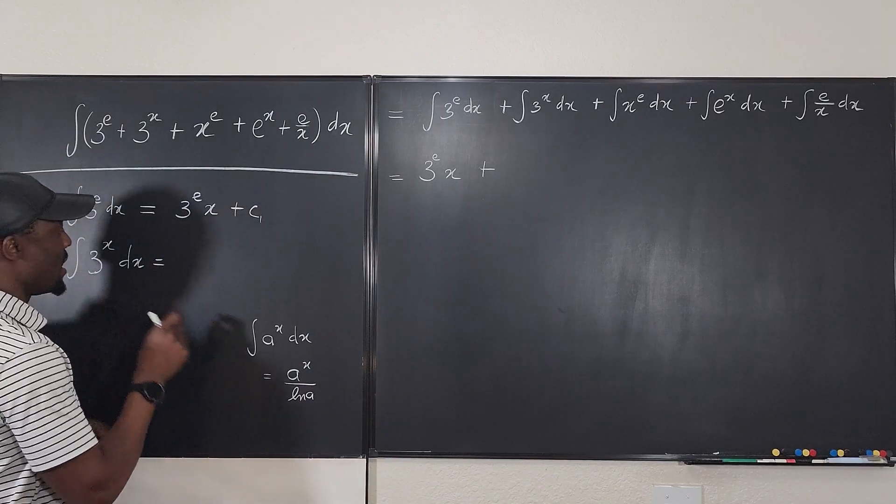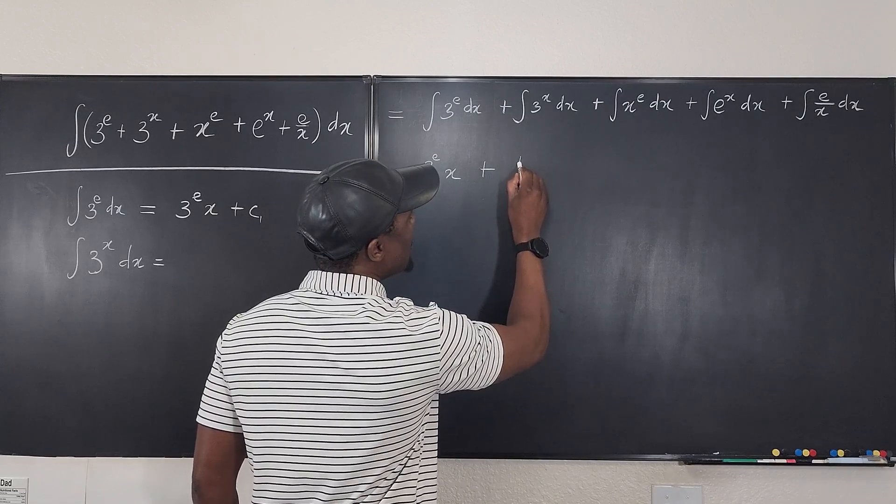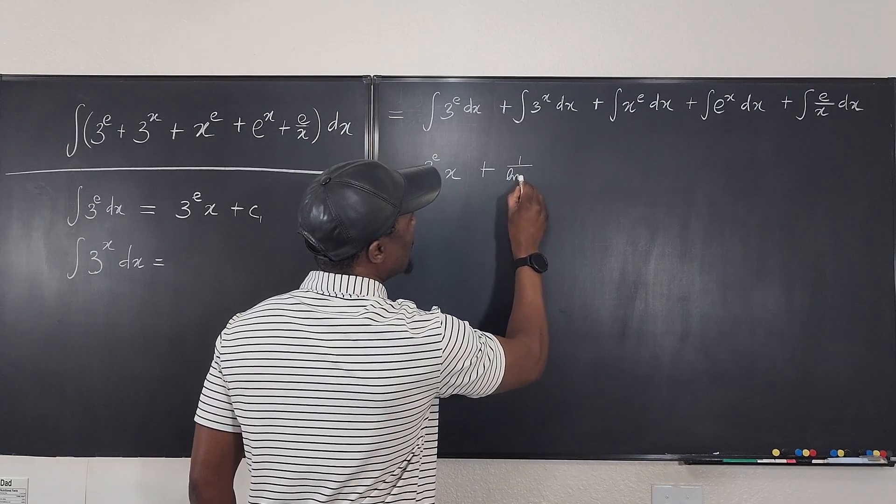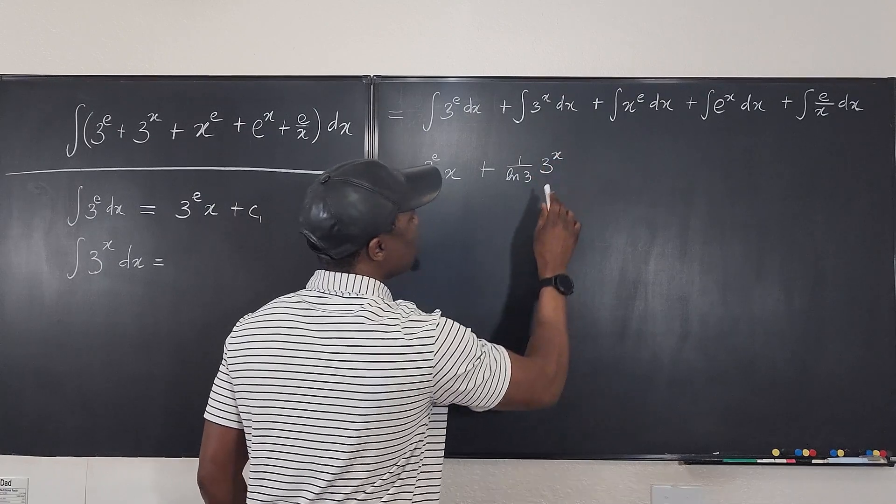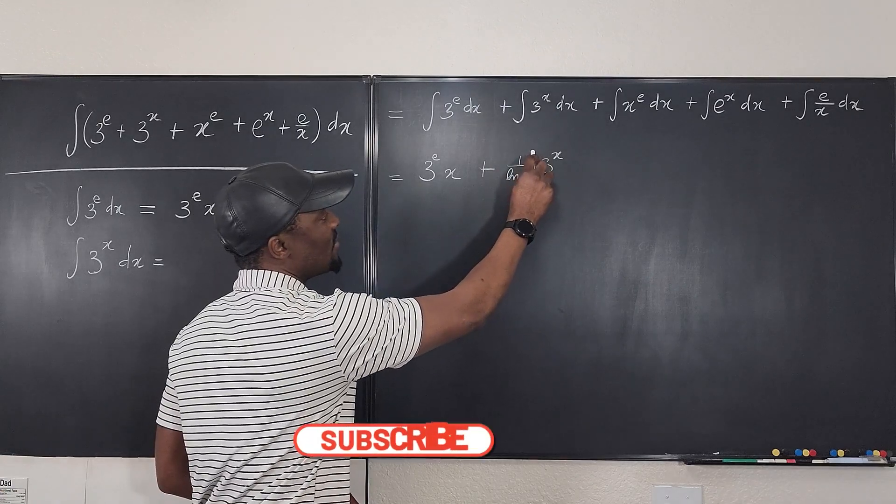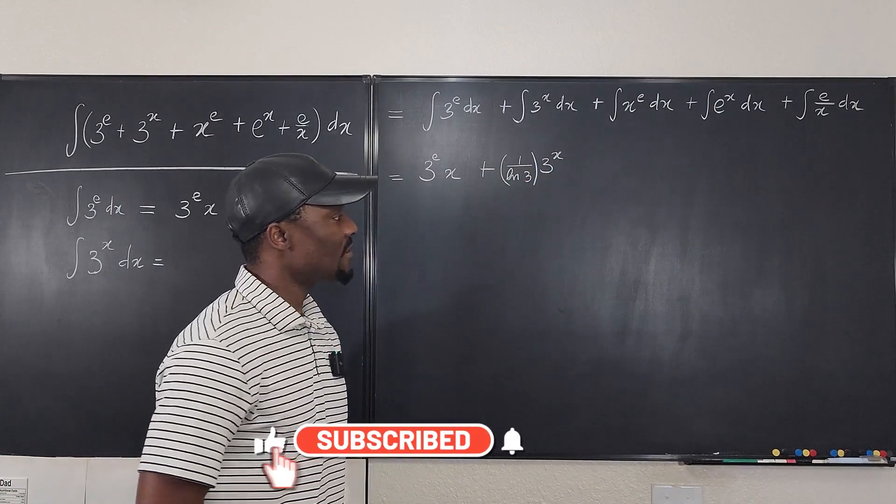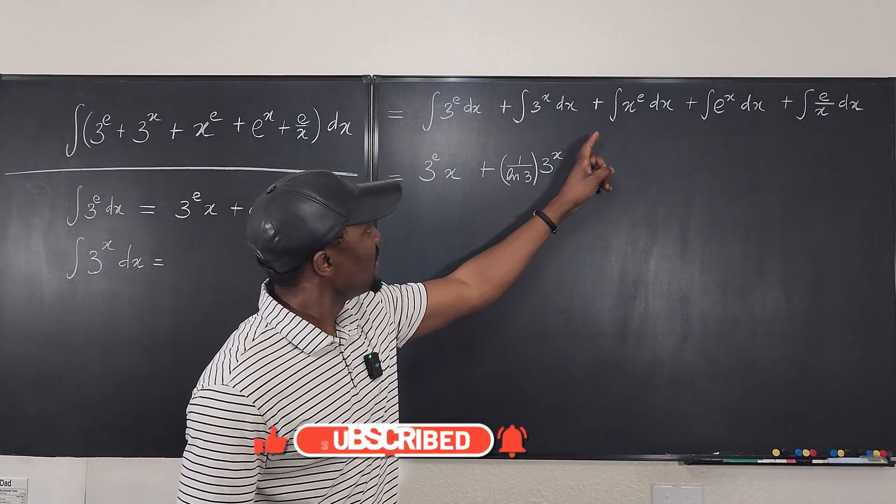This is our a, a is 3. So this integral can be written as 1 over the natural log of 3 multiplied by 3 to the x. And you're done. Or you can put this on top. Some people like to write this like this. And that's it. And then let's go to the next one.